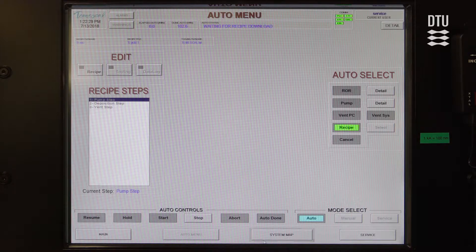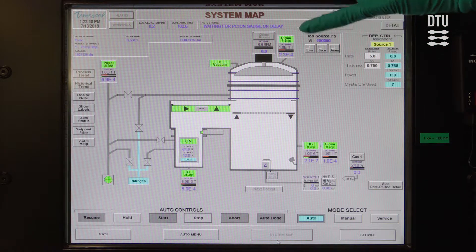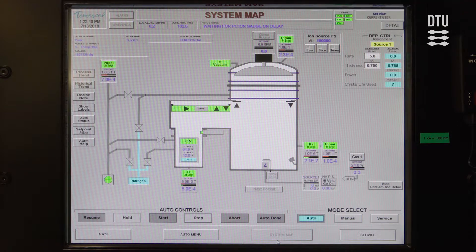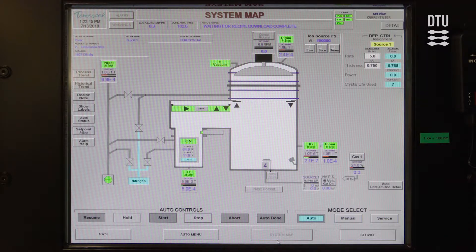And then we can go back to the system map and see what happens and follow the process. So at the top of the screen, in the auto status, you can see what the system is doing. And right now it is downloading the recipe.